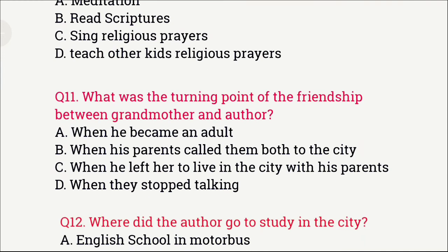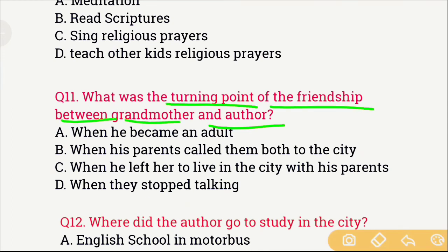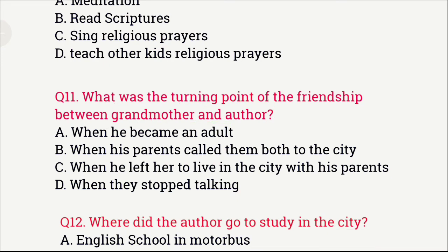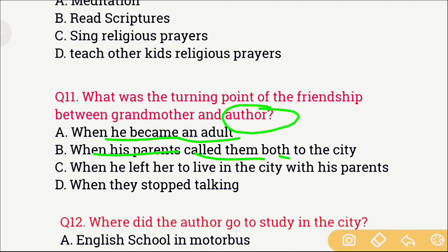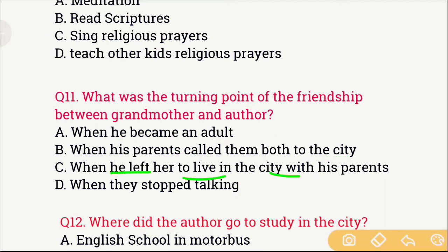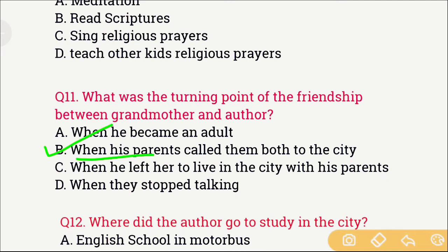Question number 11: What was the turning point of the friendship between grandmother and the author? The options are: A) When he became an adult, B) When his parents called them both to the city, C) When he left her to live in the city with his parents, and D) When they stopped talking. The right answer is option B — when his parents called them both to the city.